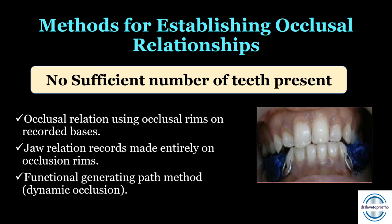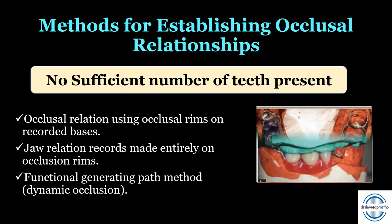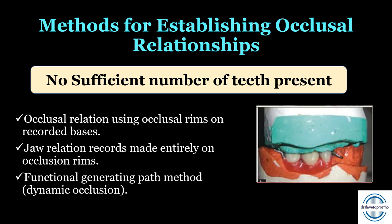The third option is the functional generating path method, also called dynamic occlusion. It is called functional and dynamic because functional movements of the mandible occur during recording. We make the record bases, make the occlusal rims, adjust the vertical dimension, and then ask the patient to glide and chew so that the wax is carved by the opposing teeth. That template is then used to place the artificial teeth. The advantage is that this method is more physiologic, not arbitrary or static like the previous methods.